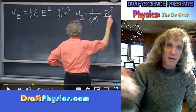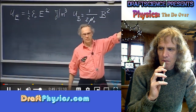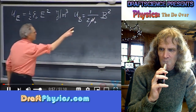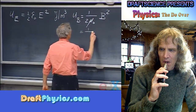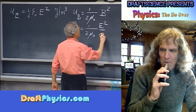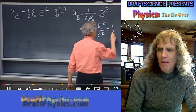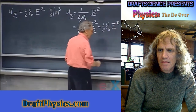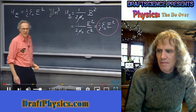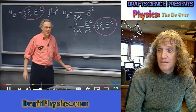When dealing with traveling waves in vacuum, at any moment the magnitude of B is E divided by c. So the magnetic energy density is also one-half epsilon-zero E-squared. This is an amazing result: the energy density in the magnetic field of a traveling wave is exactly the same as the energy density in the electric field.